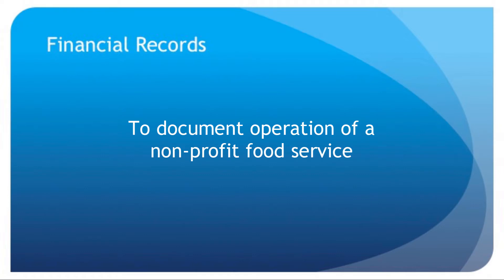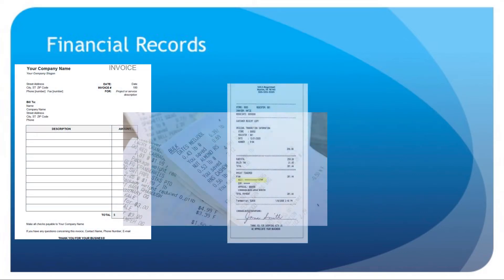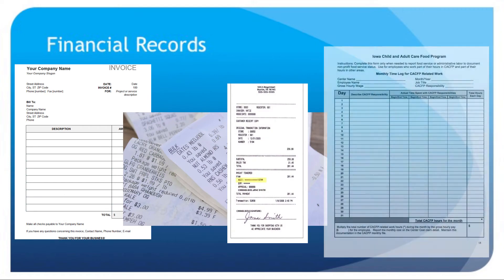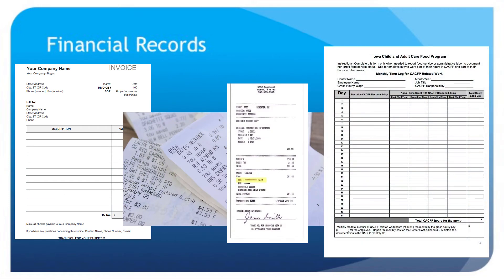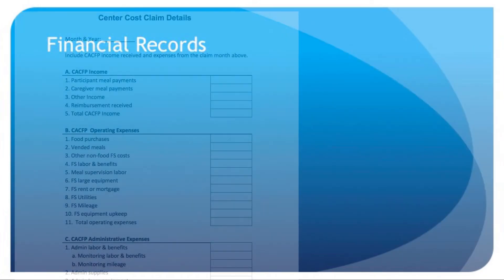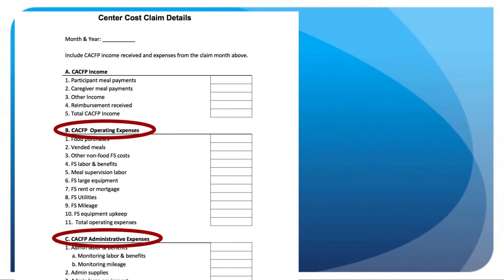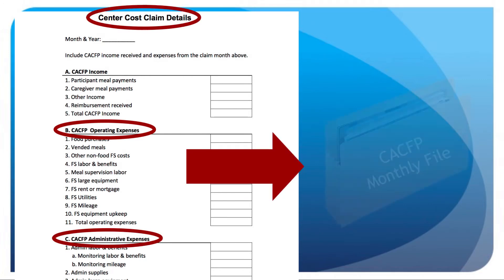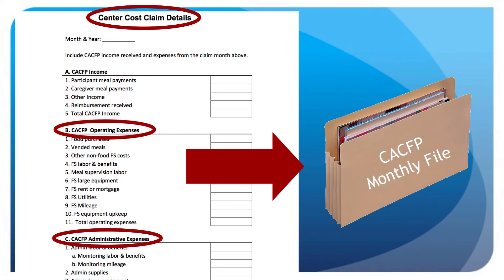An at-risk sample cycle menu and blank menu form can also be found in Appendix D. Keep financial records to document operation of a non-profit food service, including invoices, receipts, labor logs, and other records as required. Documentation for all food service and administrative costs reported on the monthly CACFP cost claim details must be on file.